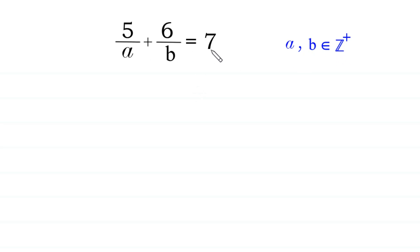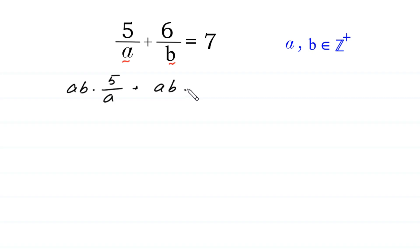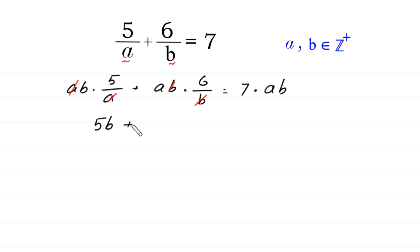First, we multiply both sides of this equation by the LCM of a and b. The LCM of a and b is ab, so we multiply each term by ab: ab times 5 over a plus ab times 6 over b is equal to 7 times ab. This a cancels with this a and this b cancels with this b, leaving 5b plus 6a is equal to 7ab.